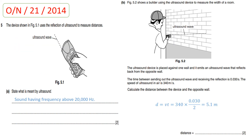The next question is from October-November paper 2.1, 2014. A device uses the reflection of ultrasound to measure distances. Ultrasound is sound having a frequency greater than 20,000 hertz. In part B, a builder uses the ultrasound device to measure the width of a room. The device is placed against one wall and emits an ultrasound wave that reflects back from the opposite wall.